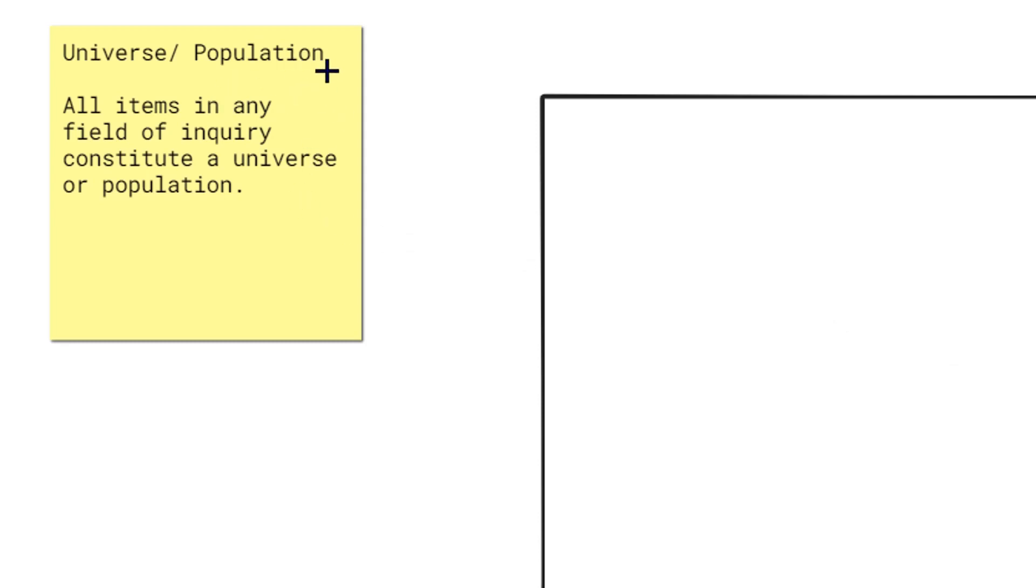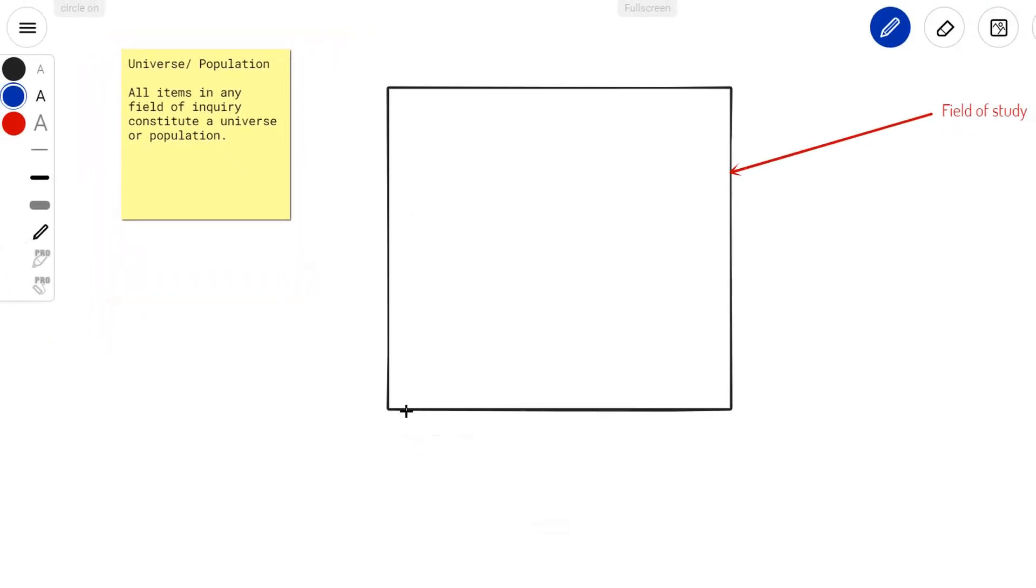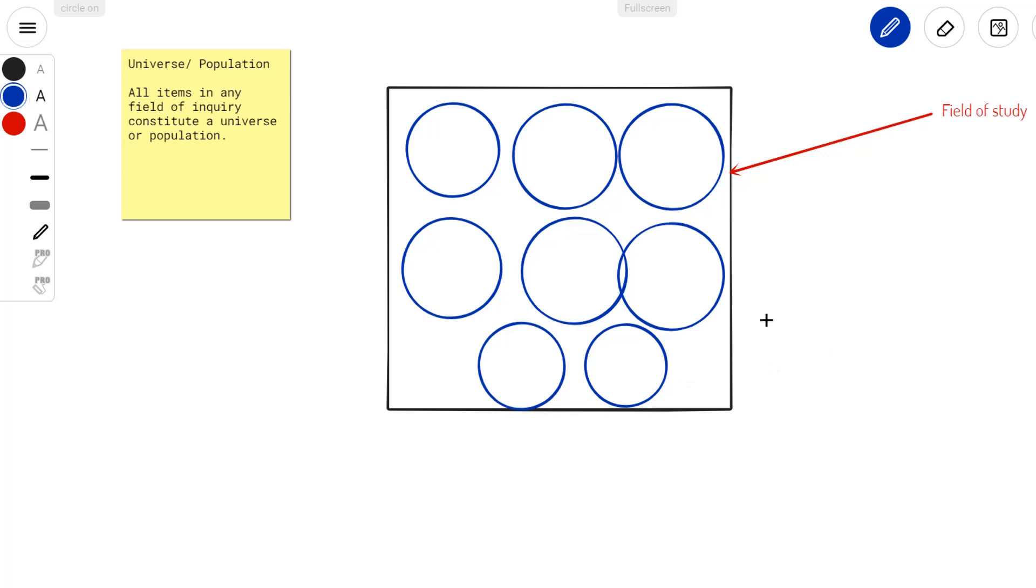Universe or population is defined as all the items in any field of inquiry that constitute the universe or population. Let us consider that this rectangular box refers to the field of study. How many units are present in here? That is the population. Suppose there are three units, now the population is three. Suppose we add more units, now the universe or population is six. When we add two more, now it becomes eight. So universe or population refers to all the units which are present inside the field of study.